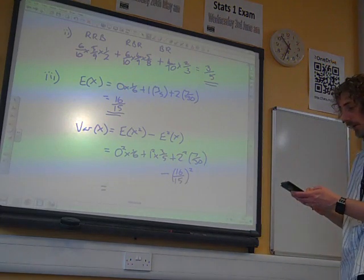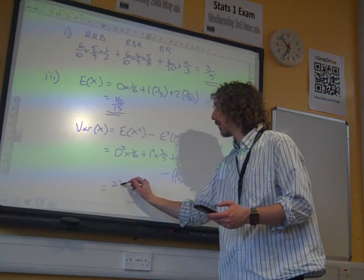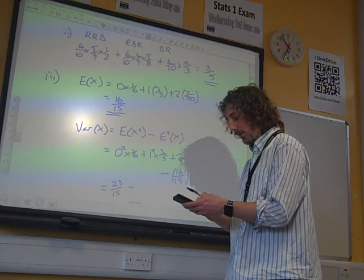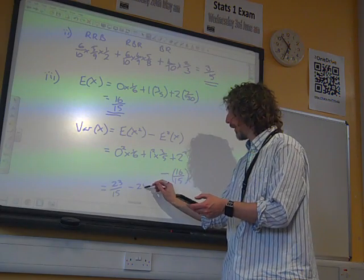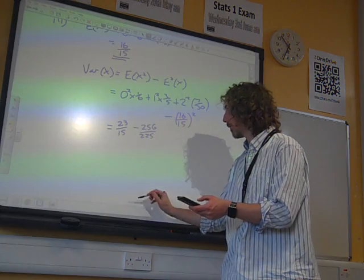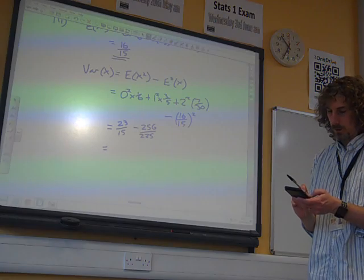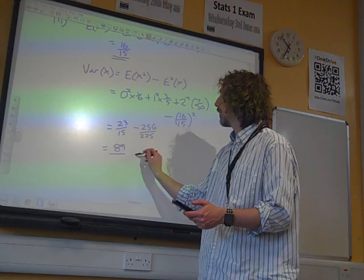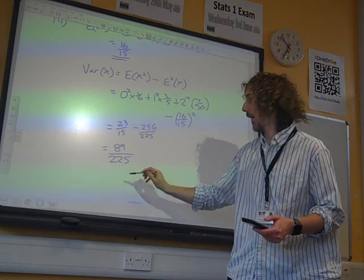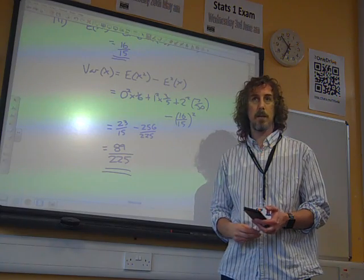That first line gives us 23 fifteenths minus 256 over 225. So, we get, I think, 89 over 225. There we go. And that's the value of the variance. Okay? All happy? All happy. Happy. Boppy! All happy, sweet, sweet.